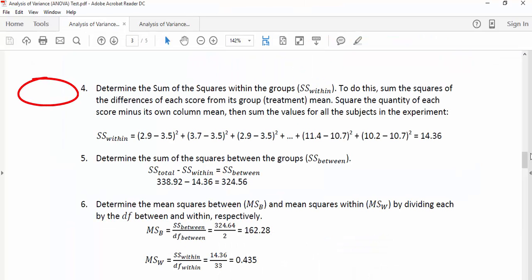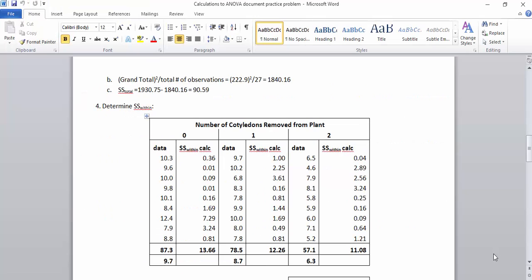Step four says to determine the sum of squares within the groups. In order to do this, we sum the squares of the difference of each score from its group mean, or treatment mean. This step should look a lot like when we practiced calculating variance when we were first learning how to do the t-test. Here's the mean for this treatment group was 9.7, and here was the first measurement. If I take the difference between 10.3 and 9.7 and square it, then I get 0.36. I did that for all of these, and did the same thing over here, comparing this group to a mean of 8.7. So I did this for all three groups: 13.66, 12.26, 11.08.